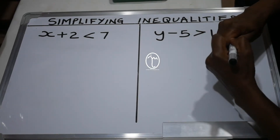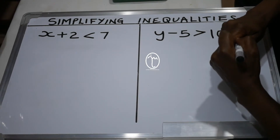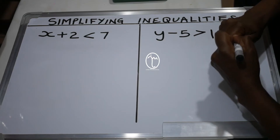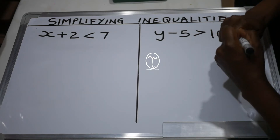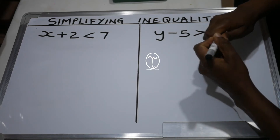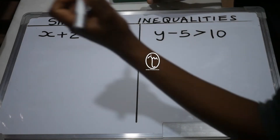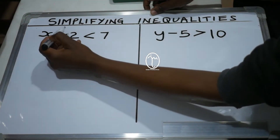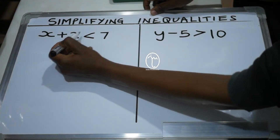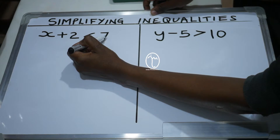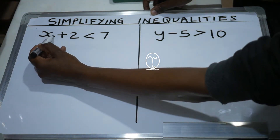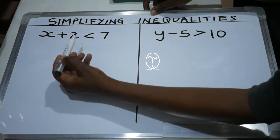Hello, welcome to this lesson where we are looking at how to simplify inequalities. The first inequality we have says x plus 2 is less than 7. We want to get the value of x.